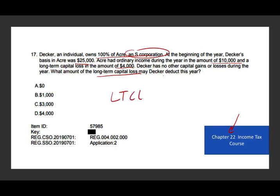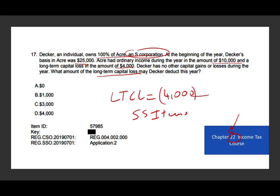This question tests two things: S Corporation rules and the rules for capital losses. Long-term capital losses are separately stated items — you need to know what separately stated items are. The $4,000 capital loss transfers to Decker's personal return. On a personal return, you can only deduct up to $3,000 in capital losses per year. So the answer is $3,000. The question frames it in an S Corporation context to test whether you know separately stated items.